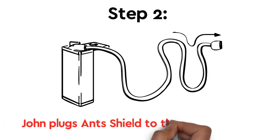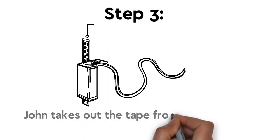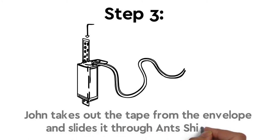Step 2: John plugs ANT shield to the power supply. Step 3: John takes out the tape from the envelope and slides it through the ANT shield.